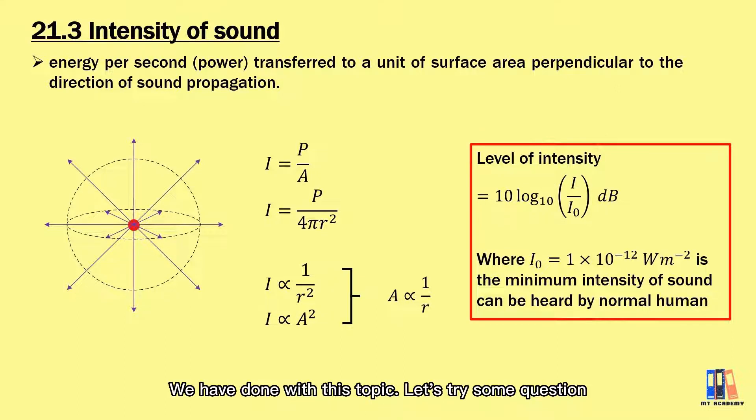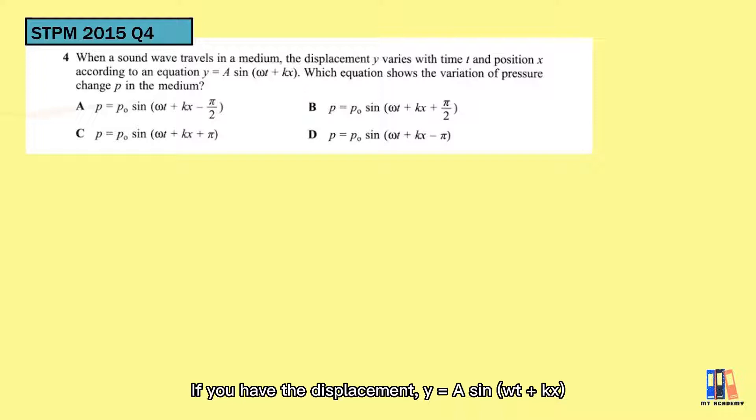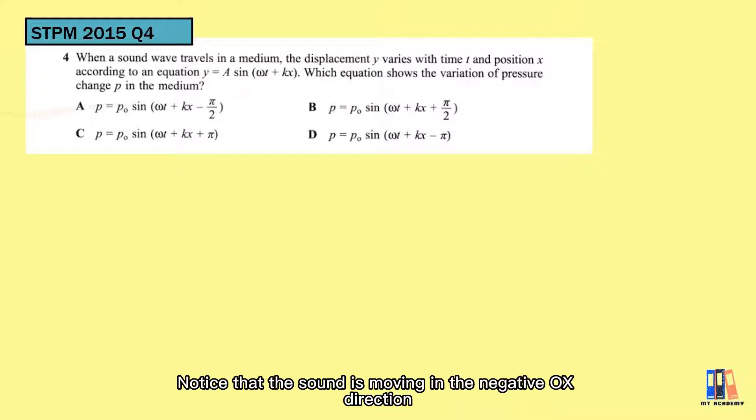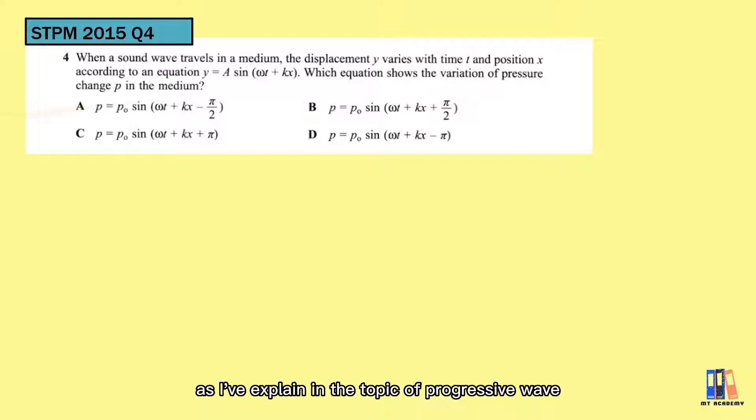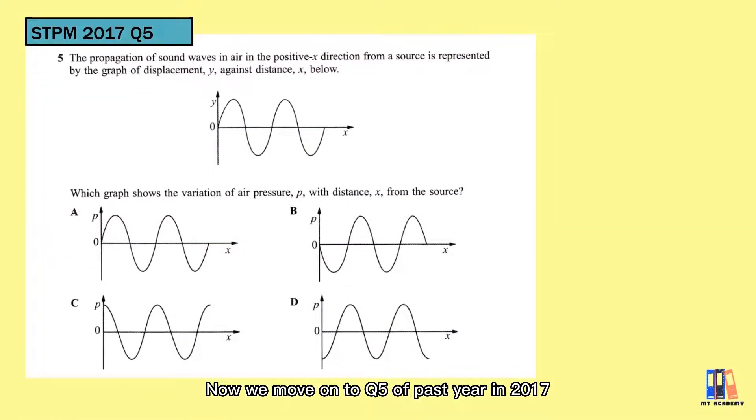So we are done with this topic, let's try some questions. First, this is from STPM 2015. If you have the displacement of y equals a sin(ωt + kx), notice that the sound is moving in the negative x direction as I've explained in the topic of progressive wave. However, this still doesn't affect much on the pressure variation. Remember, it is 90 degrees lagging the displacement, so the correct answer here would be A. Now we move on to the question from STPM 2017. So this should be not a problem for you, and the answer is D. So rewatch again if you couldn't get the answer.